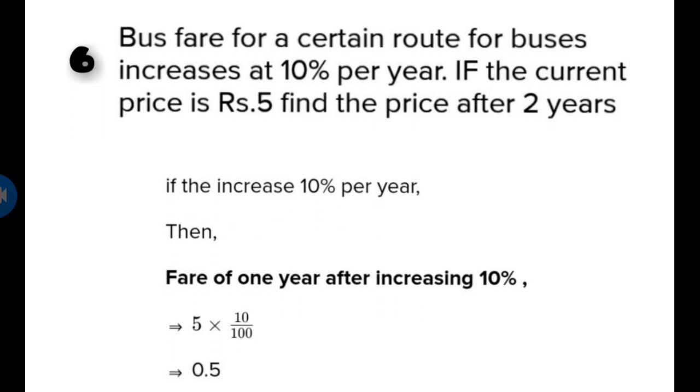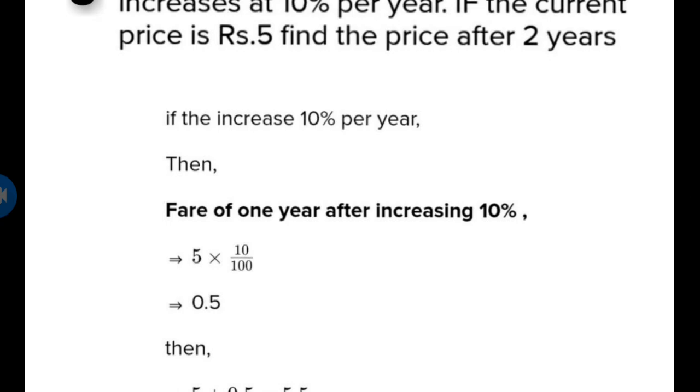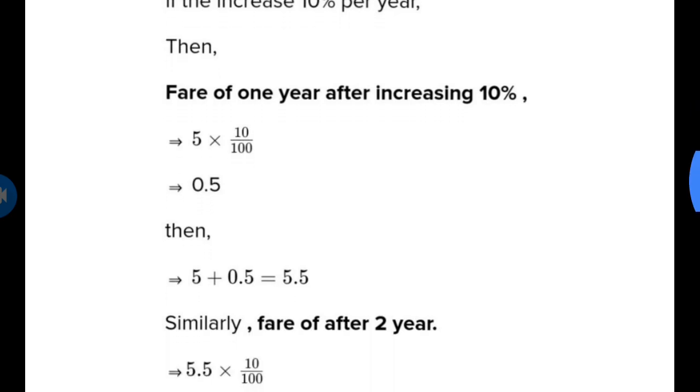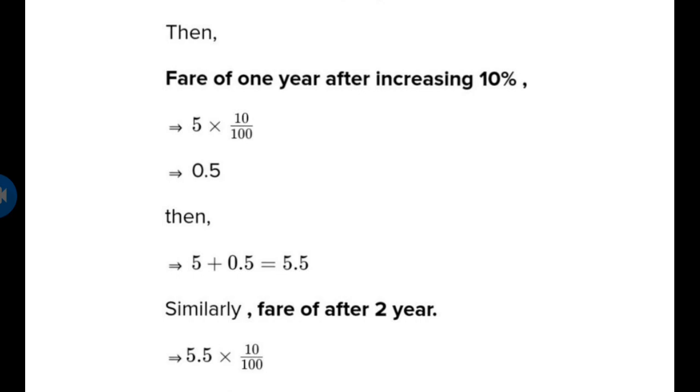The fare of one year, after increasing 10%, is 5 multiplied by 10 upon 100, so we will get 0.5. Then we are going to add 0.5, so we will get 5.5.